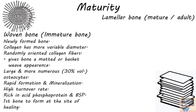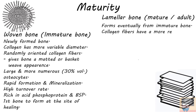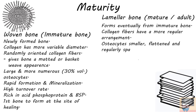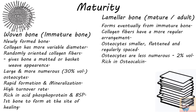Lamellar bone forms eventually from immature bone. The collagen fibers have a more regular arrangement compared to woven bone. Osteocytes are smaller, flattened, and regularly spaced, and are relatively less numerous — occupying about 2% of bone volume compared to 30% in woven bone. Lamellar bone is rich in osteocalcin and shows a slow rate of formation, mineralization, and turnover compared to woven bone.